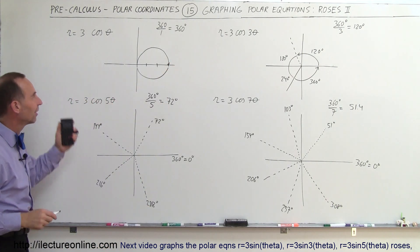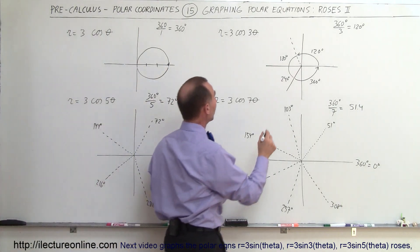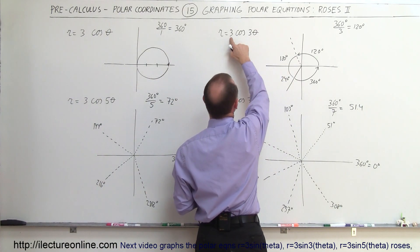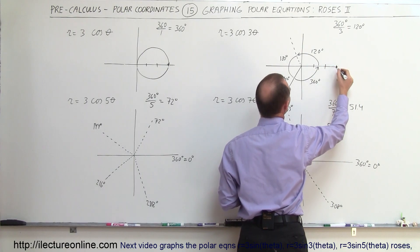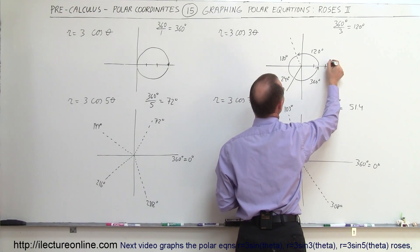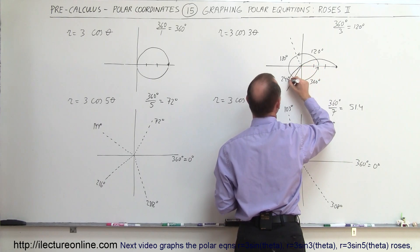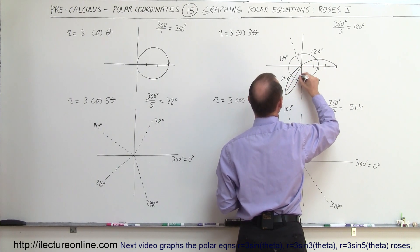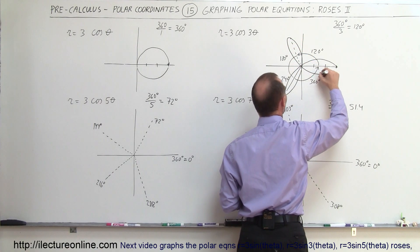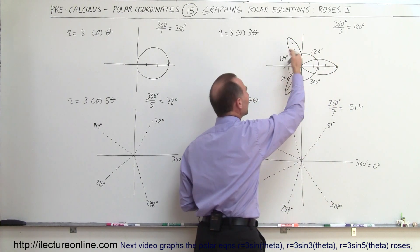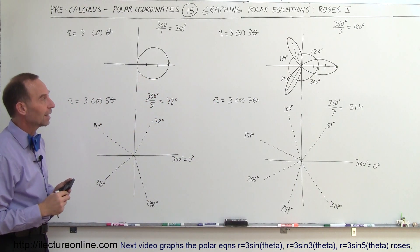For the 3-leaf one, we're going to start over here when the angle is 0 — R is equal to 3. We'll come down this way, then continue in this direction, then this direction, then come back and finish up. That would be the 3-leaf rose when we have 3 times the cosine of 3 theta.